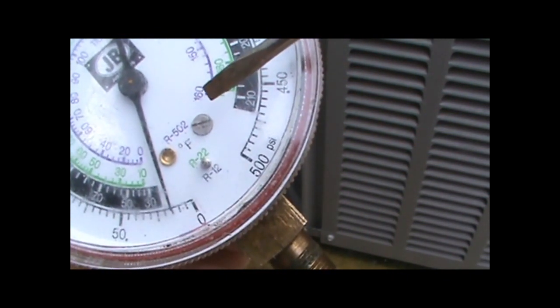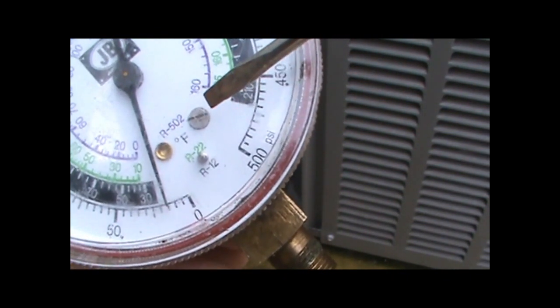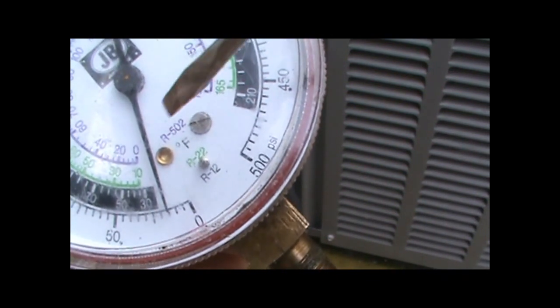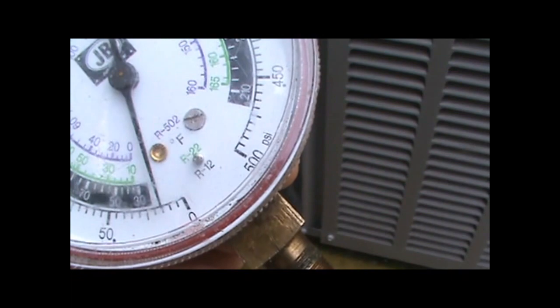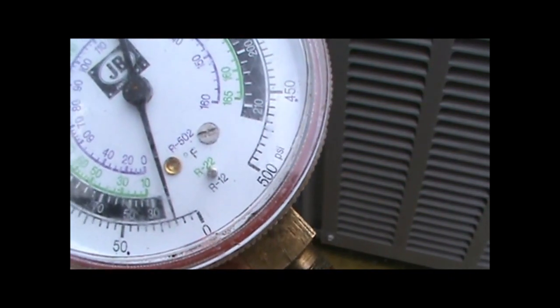Sometimes the face plate of your gauge will have a small pry out plug that you can pry out and then just stick your screwdriver right in there and adjust it without having to take the face off. But on this one we'll have to take the face plate off.